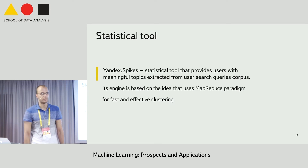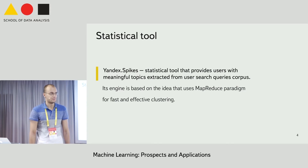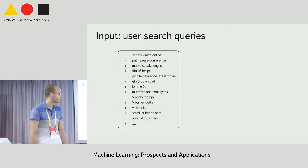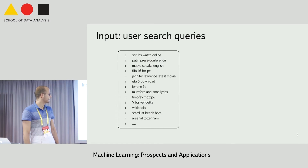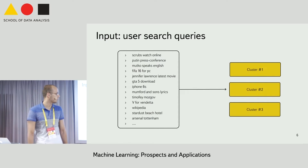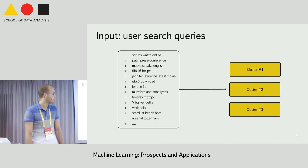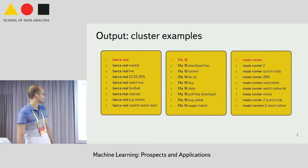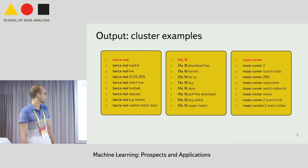It's quite simple, efficient, and of decent quality, so it's probably worth knowing about. I'm going to tell you about its engine, not about applications. The input of the algorithm is a set of user web search queries, and the output is a set of meaningful clusters consisting of those search queries. Here is an example: the left cluster is about a football match, the middle one is about a computer game, and the right one is about a movie.